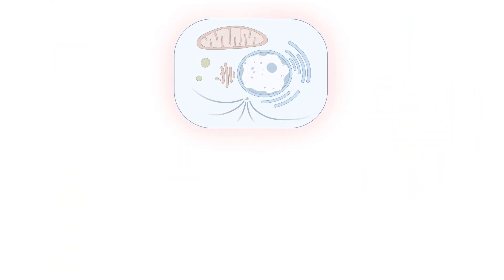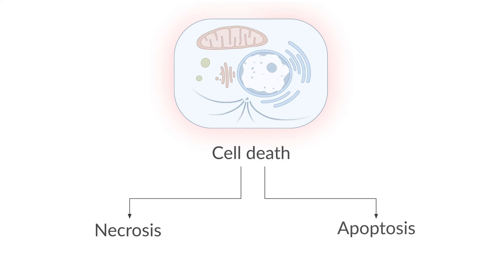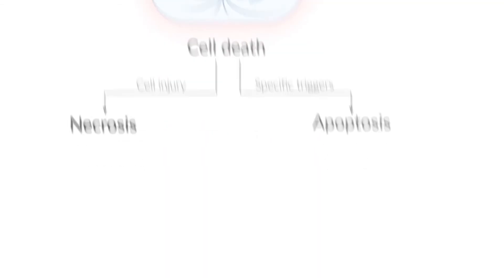There are two ways in which the body's cells undergo cell death: necrosis and apoptosis. Necrosis is usually caused by cell injury, whereas apoptosis is more tightly regulated and initiated by specific triggers. Let's take a closer look at the main characteristics of each and their different roles.